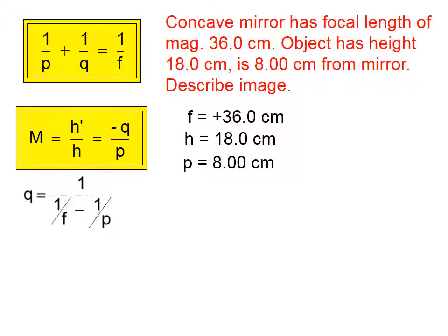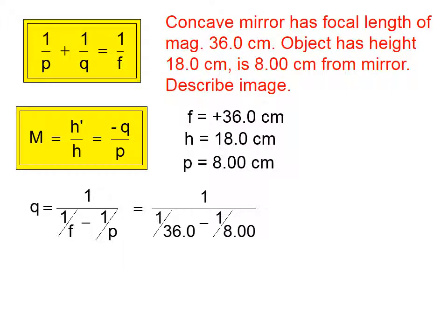We need to describe this image. So we're going to use this magnification equation, which in an earlier lesson I went from that magnification equation to solving it for the image distance. So I'm not going to redo that again. I trust you're able to do that. When we put the numbers in, and make sure that you know how to type this into your calculator, we're going to get a q, that is an image distance, of negative 10.3 centimeters.